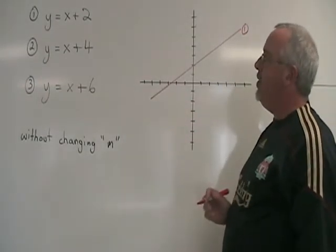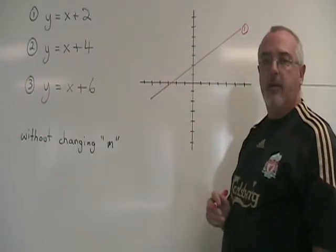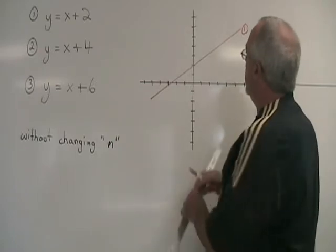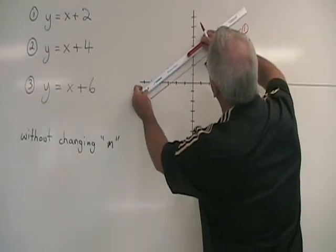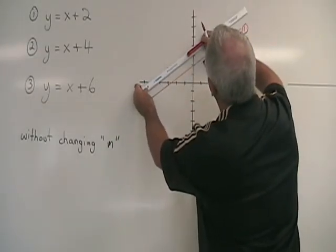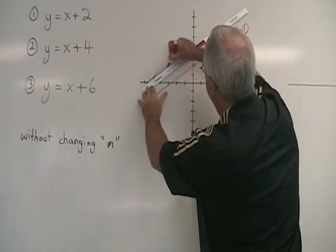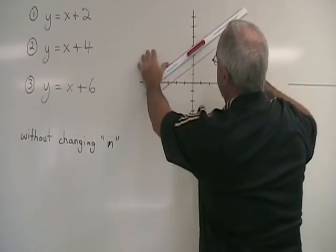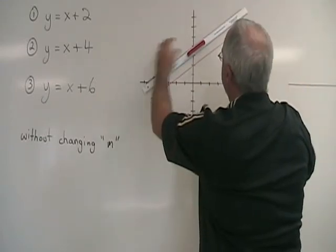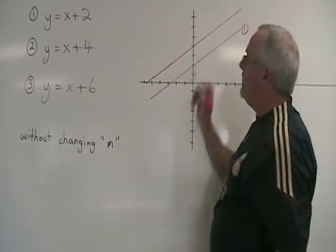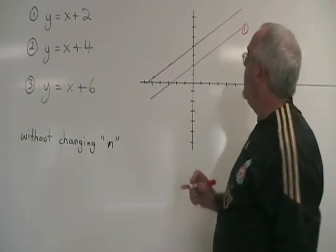Equation 2 has the same slope, but the y-intercept has changed to 4. We are going to get a line with the same angle, which goes through 4 on the y-axis instead.